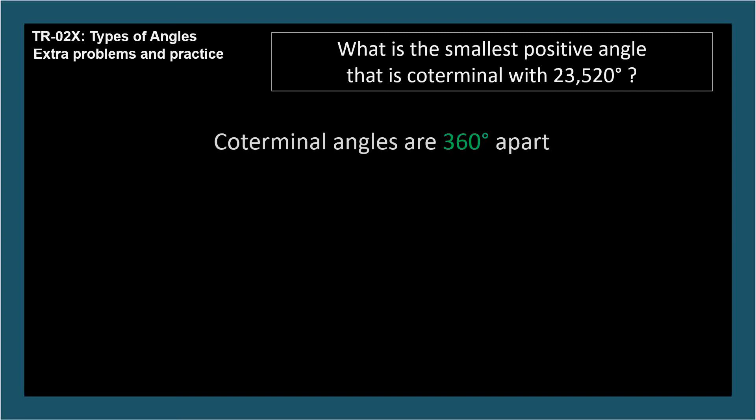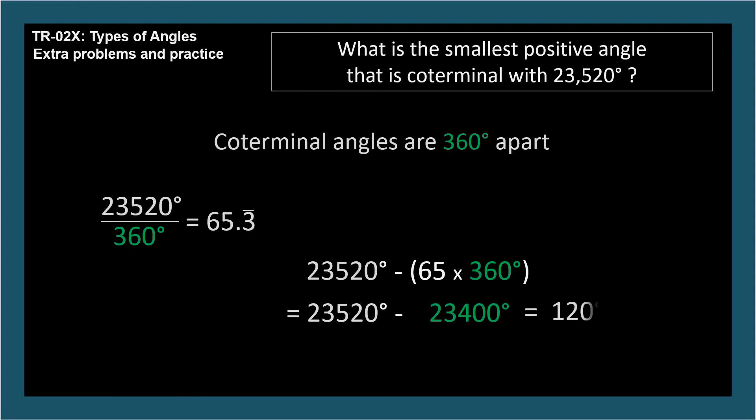Let's find out how many times 360 degrees will go into 23,520. By dividing, we get 65 and 1 third. So let's subtract 360, 65 times. That leaves 120 degrees, which is the answer.